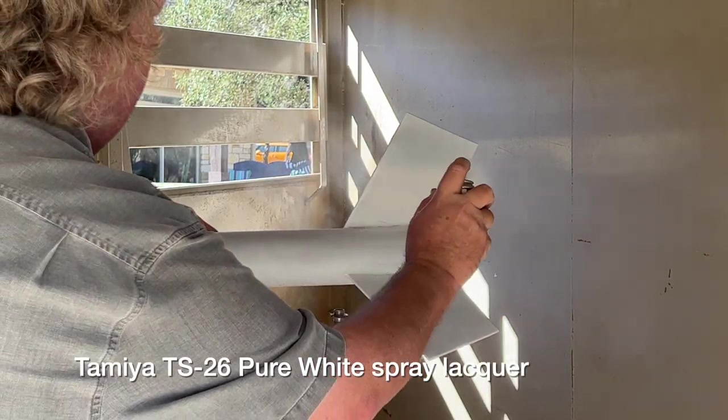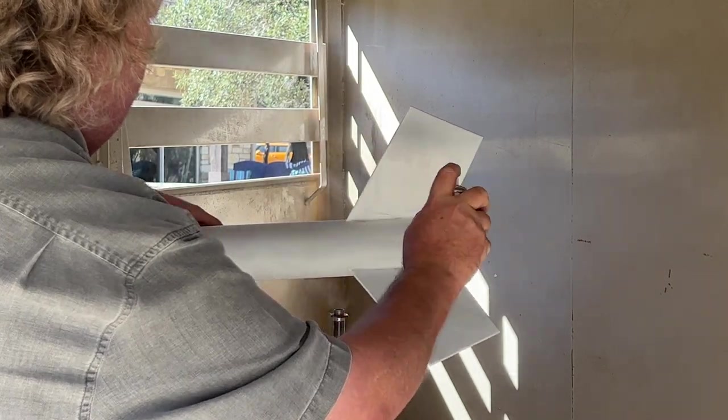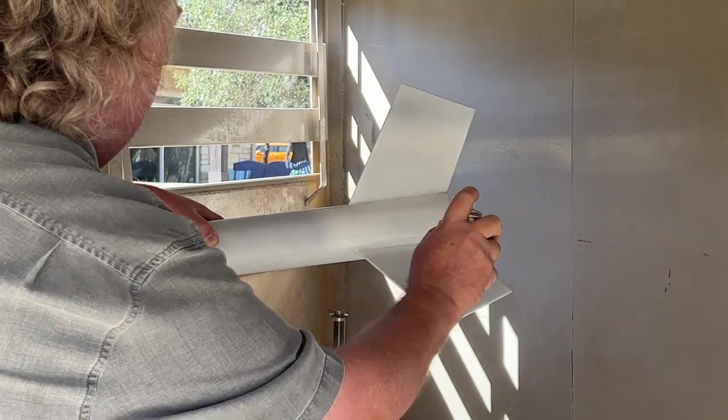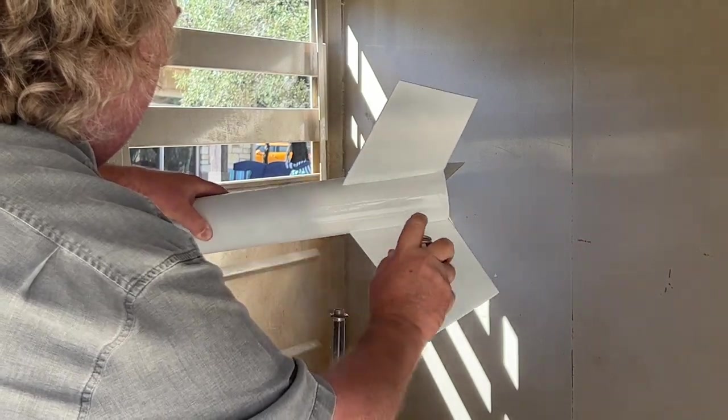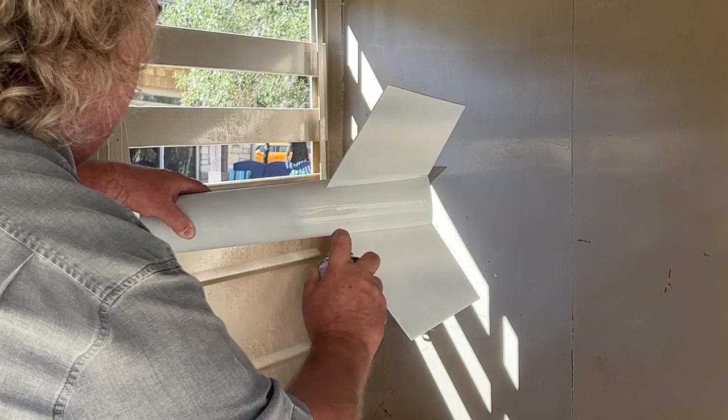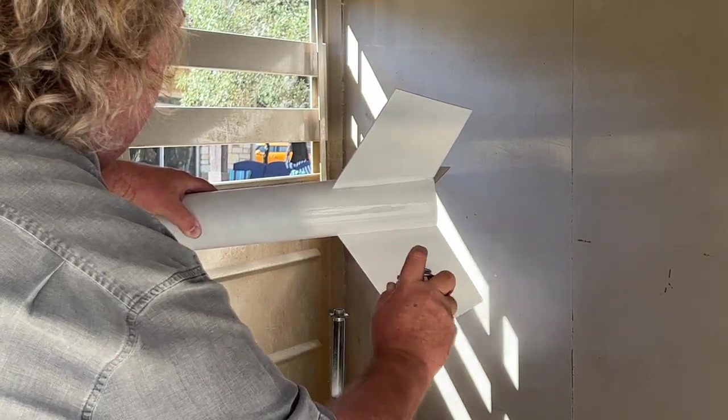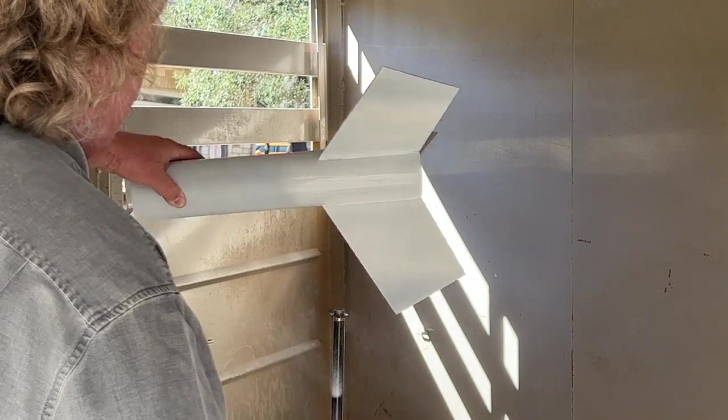We're going to apply our color coat using exactly the same process we used as the primer. We'll start the spray off the model and finish off the model. It's probably going to require four or five coats of white paint to get adequate coverage. We're going to wait about seven to ten minutes between each coat.